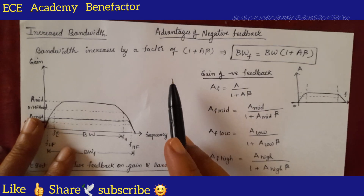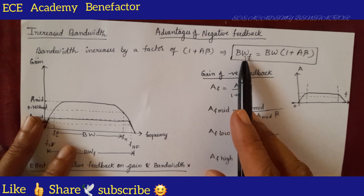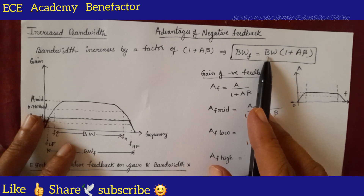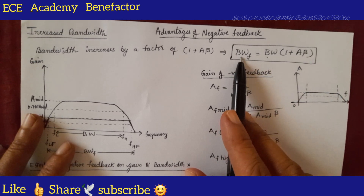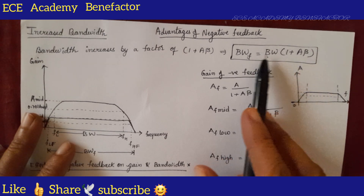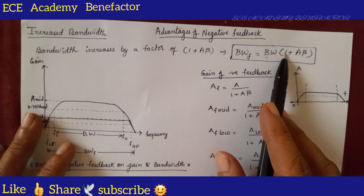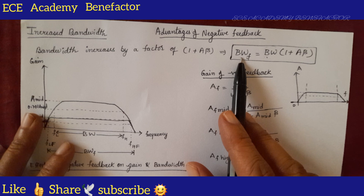The increase in bandwidth can be proved by the equation. Bandwidth with feedback is denoted by BWf, and bandwidth without feedback is denoted by BW. A is the open loop gain and beta is the feedback ratio. Bandwidth with feedback is equal to bandwidth without feedback multiplied by 1 plus A·beta. So the open loop bandwidth is multiplied by a certain factor, and thus bandwidth is increased. The equation is: BWf equals BW times (1 plus A·beta).